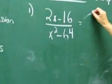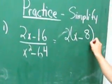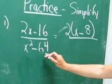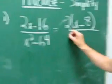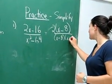So you have 2, x minus 8. Now we know from our factoring unit, this is a perfect square. So that goes into x minus 8, x plus 8.